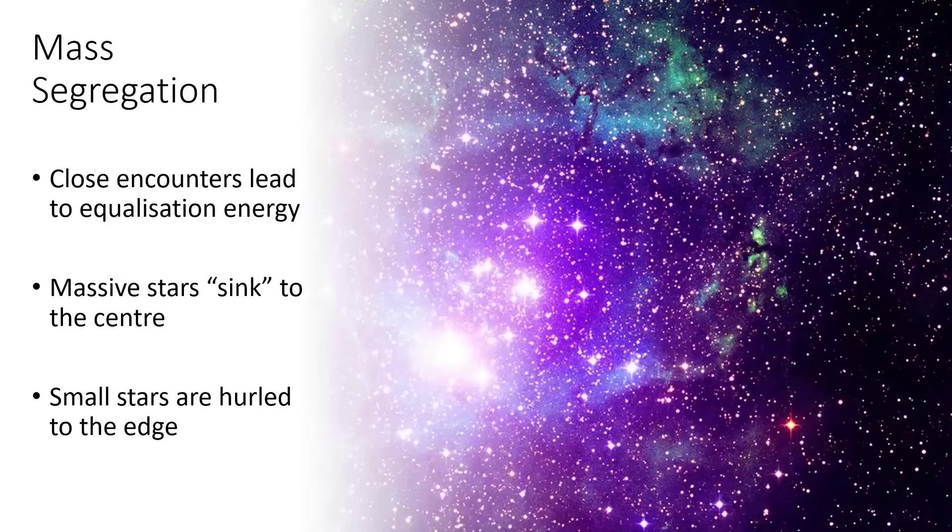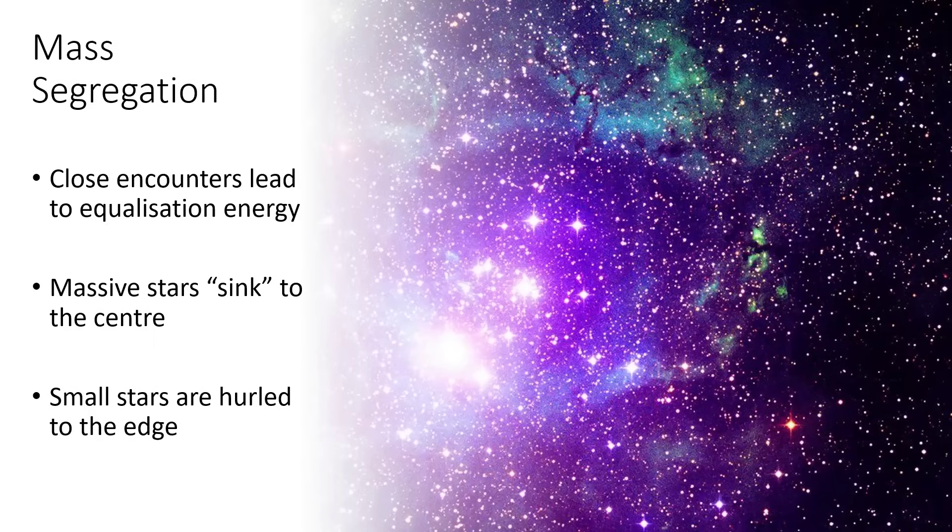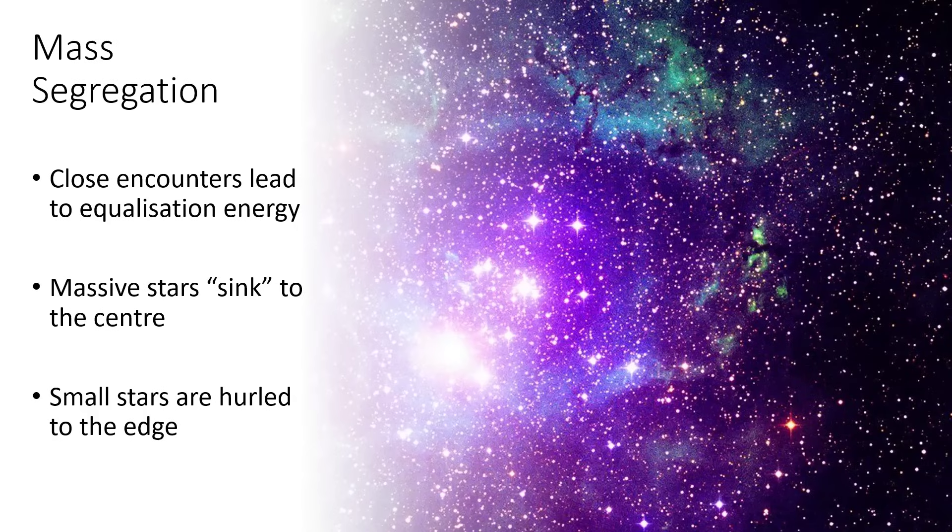What's interesting about these open clusters is that they sort their stars by mass. A process called mass segregation occurs. What happens is that as all the stars are orbiting around the center of mass, they chaotically encounter each other and have flybys. When they have a flyby, they swap momentum and energy between them. This process tends to lead to an equalization of the energy, and the consequence of that is that the massive stars tend to sink in towards the center.